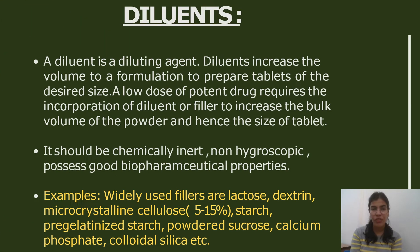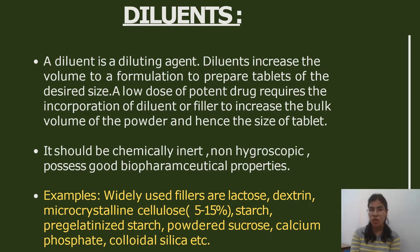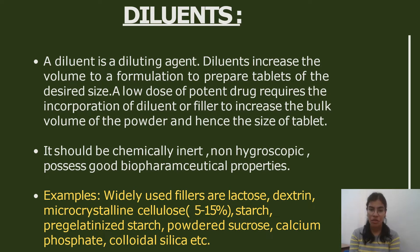First we have diluents. A diluent is a diluting agent used for increasing the volume of a formulation to prepare tablets of the desired size. For example, a low-dose potent drug requires incorporation of diluents to increase the bulk volume of the powder and, ultimately, the size of the tablet. The diluent should be chemically inert and non-hygroscopic, with good biopharmaceutical properties. Examples include lactose, microcrystalline cellulose, starch, pre-gelatinized starch, powdered sucrose, calcium phosphate, and colloidal silica.